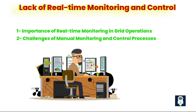Moreover, traditional grids lack real-time monitoring and control. One: Importance of real-time monitoring in grid operations. Real-time monitoring is crucial for identifying issues, optimizing grid performance, and responding promptly to emergencies in distribution grids. Without timely access to data on system conditions, operators may struggle to make informed decisions and effectively manage grid operations.